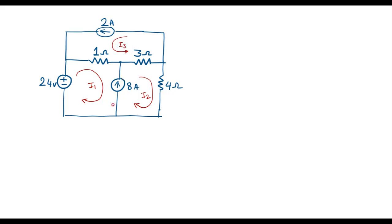So in this circuit, we can also observe that in loop I3, there is already a current source. So we do not need to apply KVL to this loop. Current I3 is nothing but 2 amps. So I can say I3 is equal to 2 amps — let me call it Equation 1.